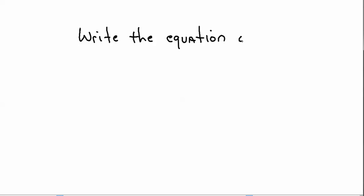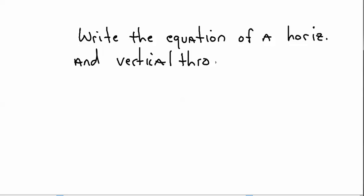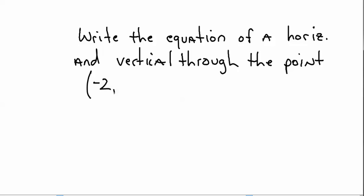The last type of question you're going to get today is writing the equation of a horizontal and vertical line through a point. They're going to give you some different values — let's say it's negative 2, 1.